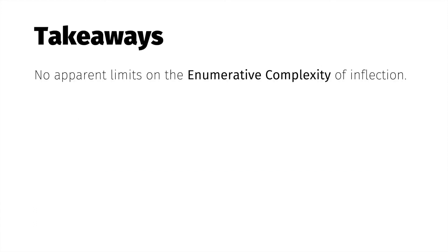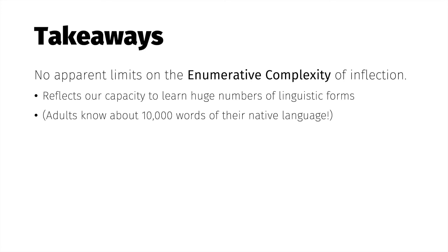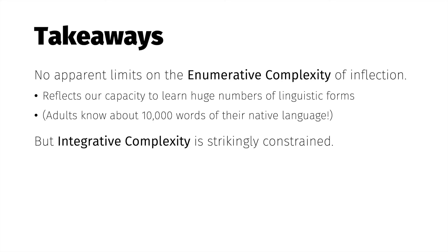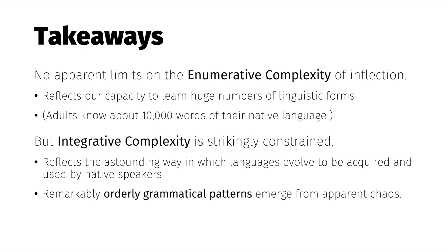What can we take away from this small sample of languages? There are no obvious limits to enumerative complexity, other than the brain's memory capacity. Affixes are not fundamentally different from independent words, and adult native speakers of any language know on the order of 10,000 distinct words — so even the huge inventory of inflectional affixes in Mazatec is a drop in the bucket. A more interesting finding is how constrained integrative complexity is — a proxy for the complexity of actual language use. Ackerman and Malouf's findings show that there's a remarkable amount of structure even in the most apparently chaotic inflectional systems.